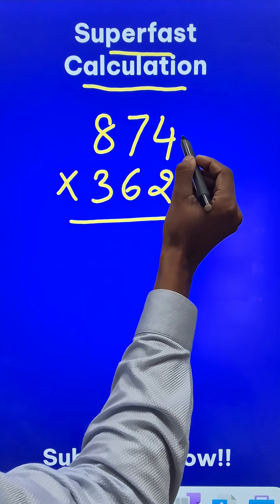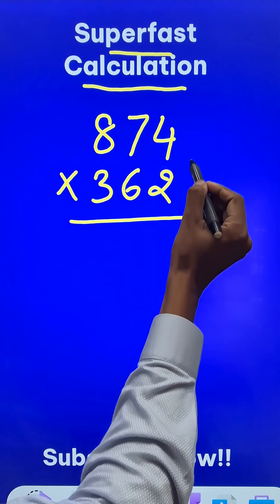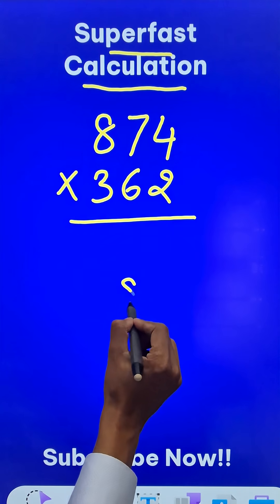First, multiply the last two digits: 4 times 2, which gives you 8. Write 8 here.